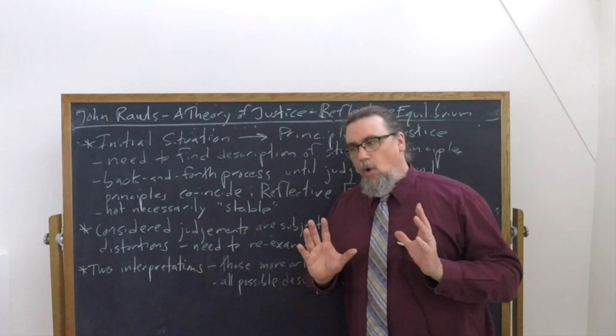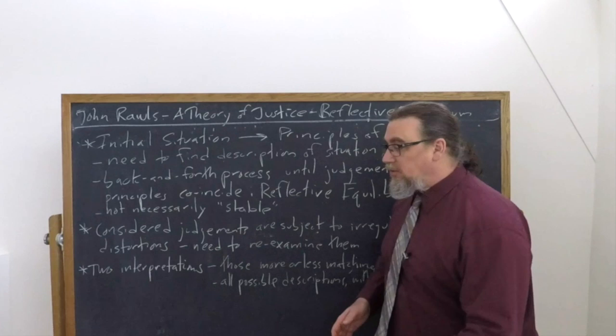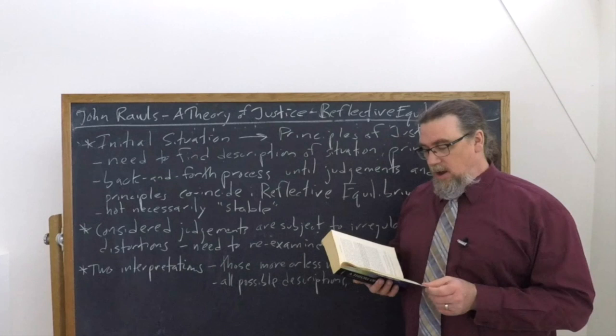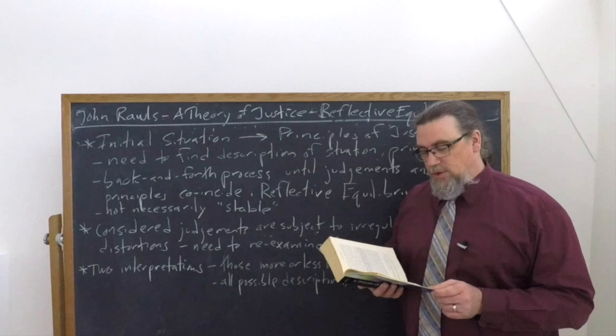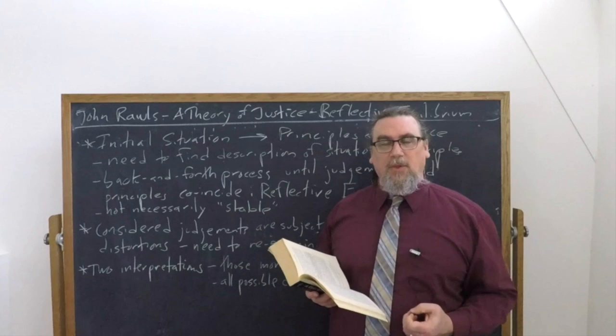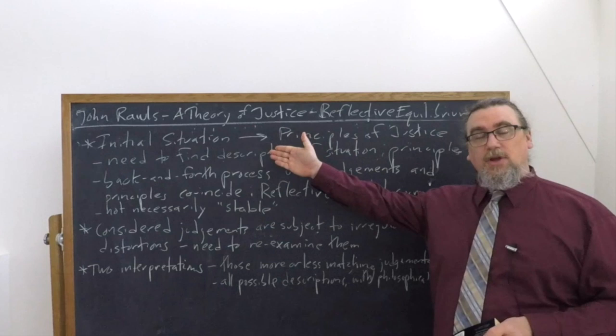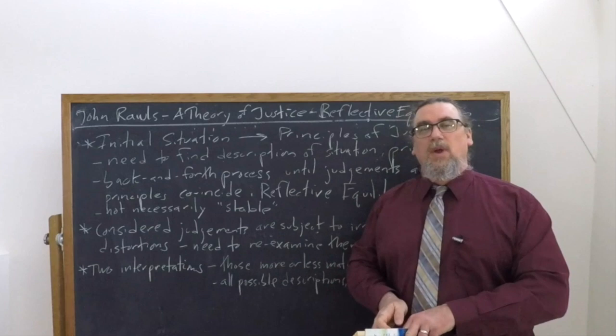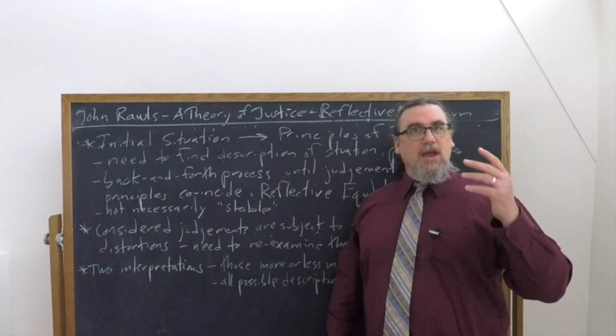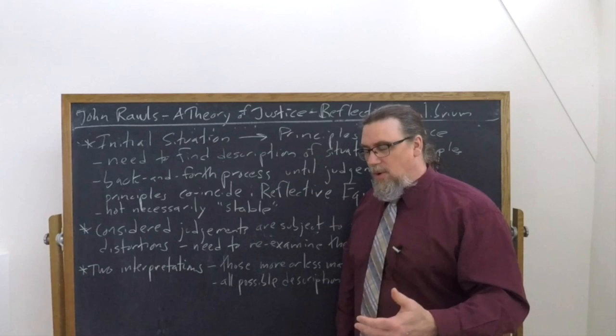He brings it up first in chapter four, very early on in the work, saying that there's a state of affairs he refers to as reflective equilibrium. If we back up a little bit, he says we look at the initial situation, which is making decisions about what kind of society we would work out for ourselves and for others in a state of ignorance of where our location in that society would be, or what our particular psychological proclivities, or any of those sorts of things.